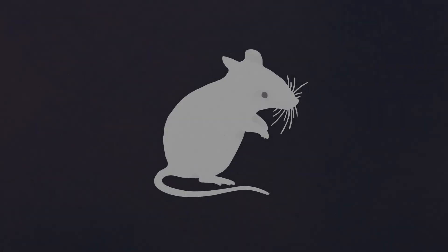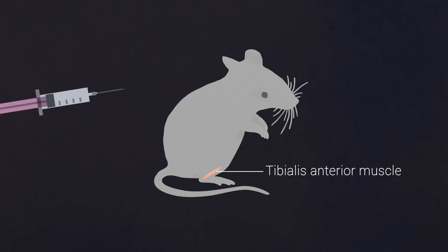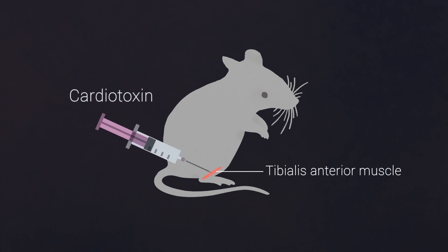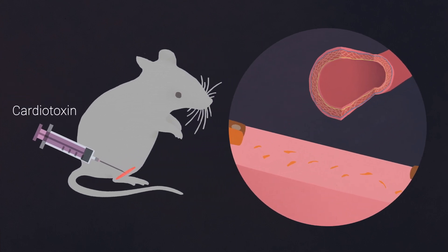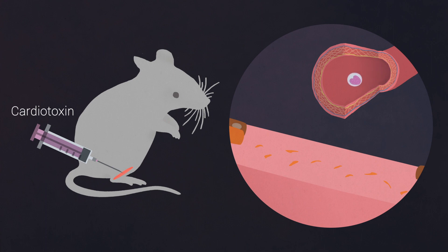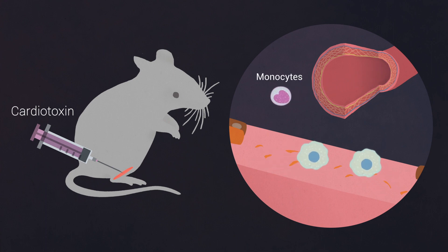In this study, we use an in vivo model of sterile physiological inflammation in mice to carry out a transcriptomic analysis of the circulating monocytes and the muscle-derived infiltrating macrophage subpopulations involved in regeneration.